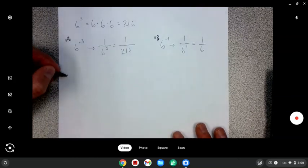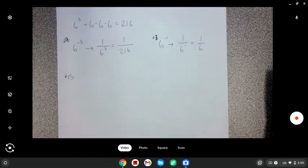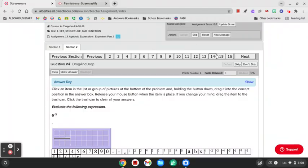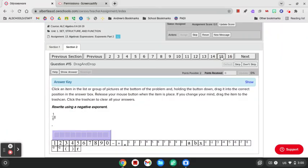Number 15 is asking us to do the same idea, except backwards. It's one over eight to the sixth power as a fraction.